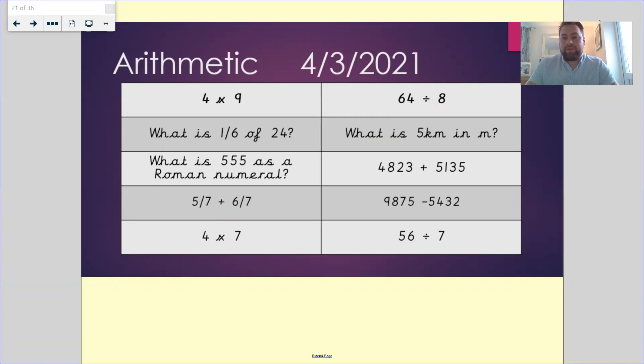Okay, hopefully you've done all of that now and the video is unpaused and we can go through the answers. So for question number one, four times nine is equal to 54.